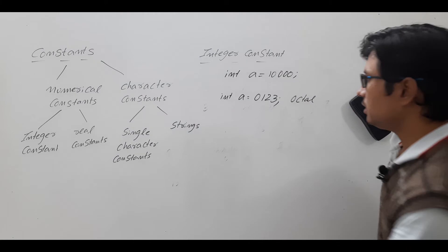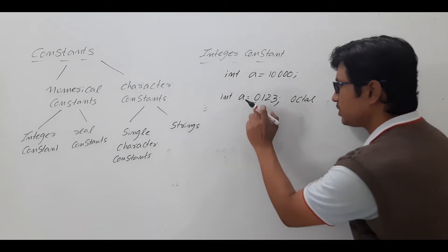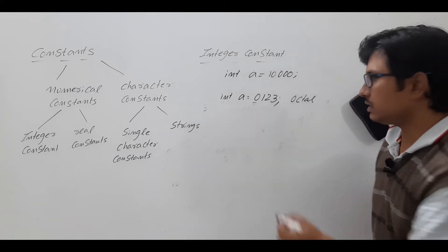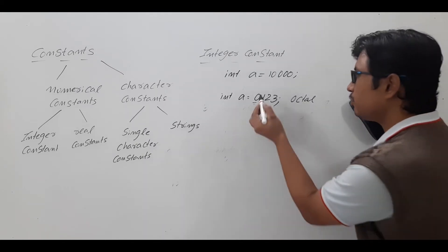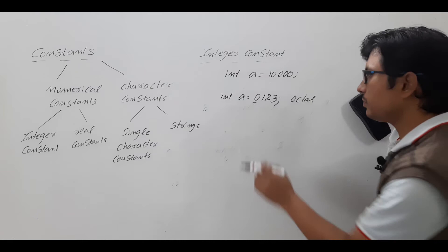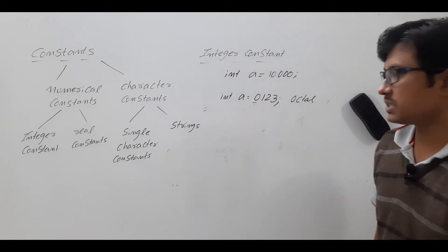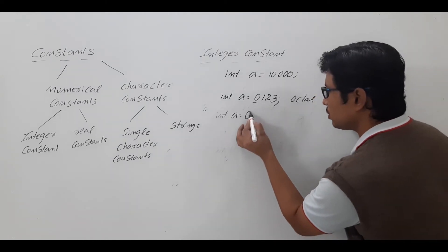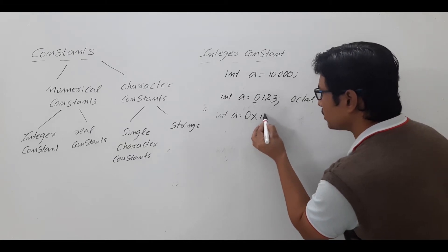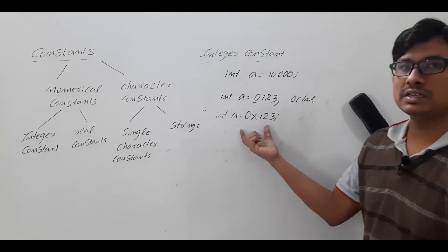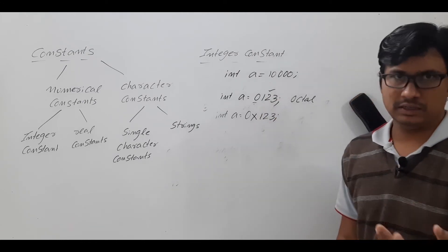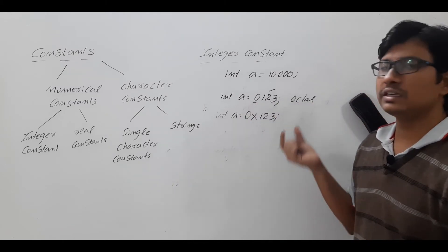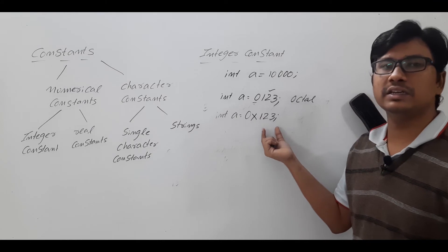Remember: if the most significant position has a leading 0, it is an octal representation. If you want to represent a hexadecimal number, you write '0x123' — the prefix '0x' indicates hexadecimal. So if you have a leading 0 in the MSB, it is an octal number. If you have '0x', it is a hexadecimal number.